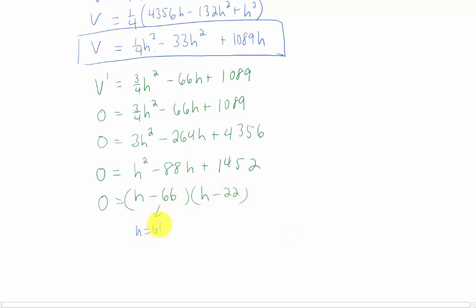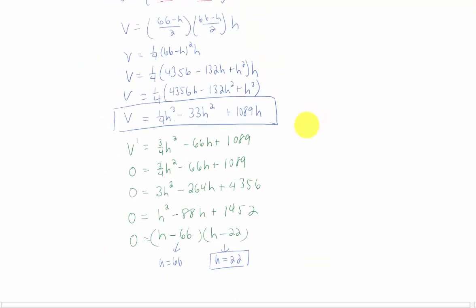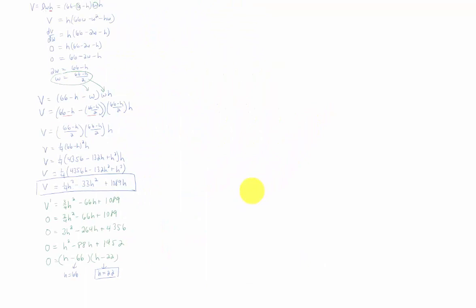One is h equals 66, and the other is the height of this rectangle is 22. Now only one of these makes sense because our length plus our width plus our height has to add up to 66. The only critical point here that makes sense is a height of 22 inches.